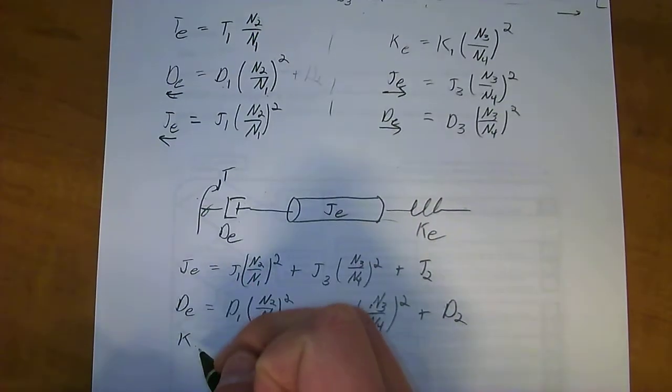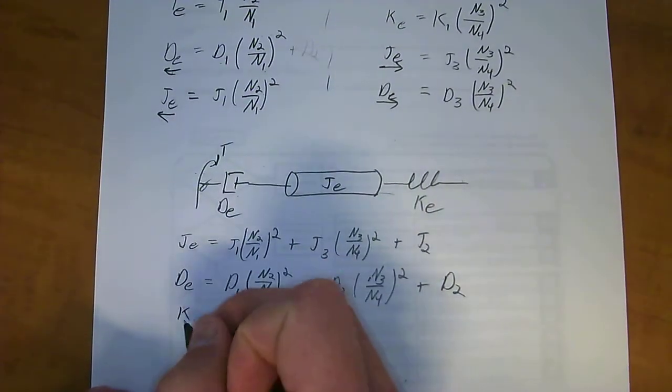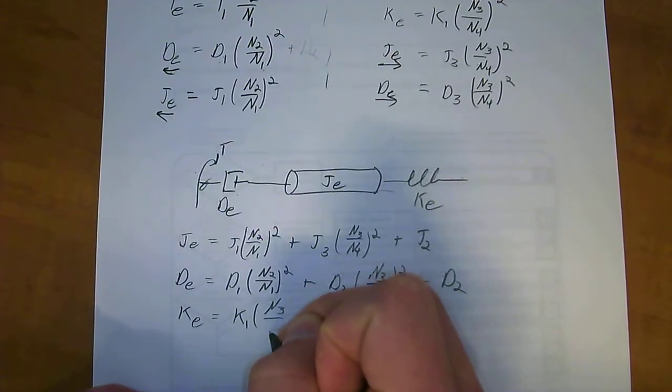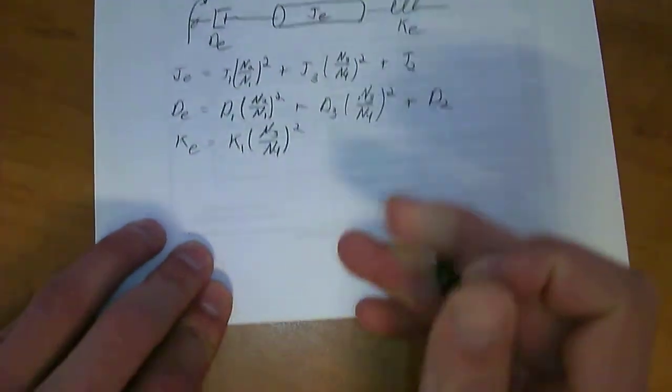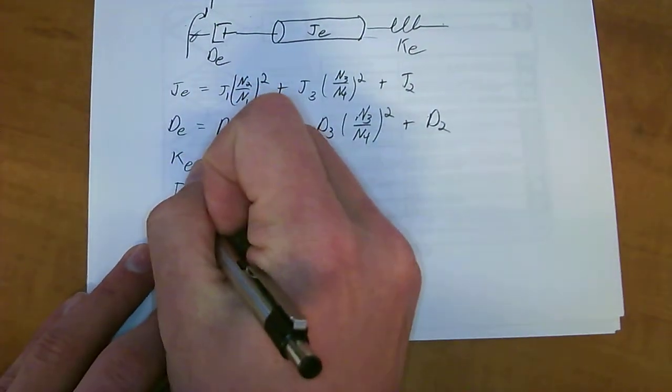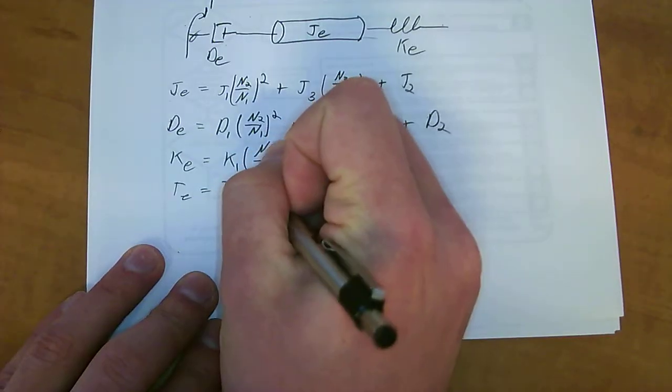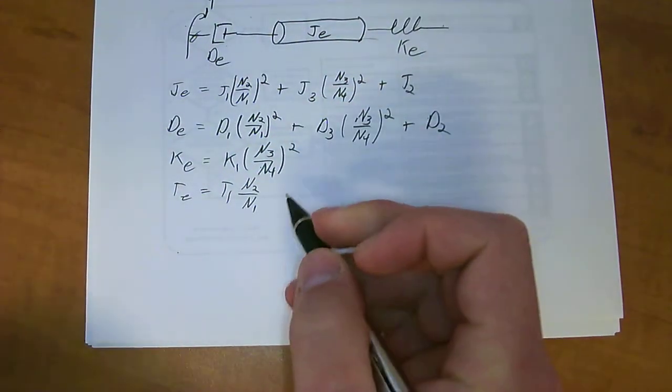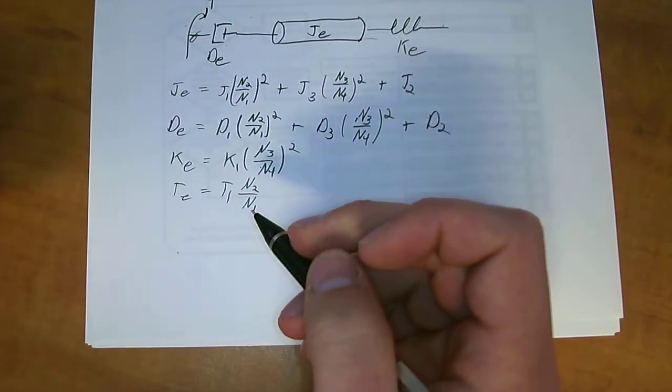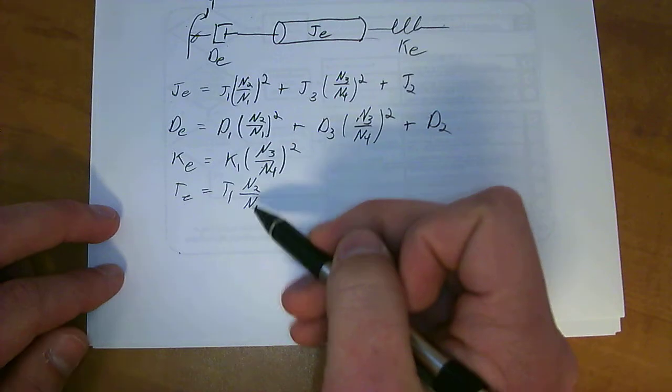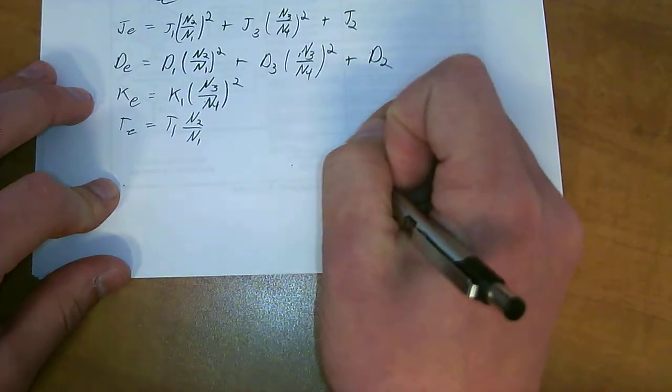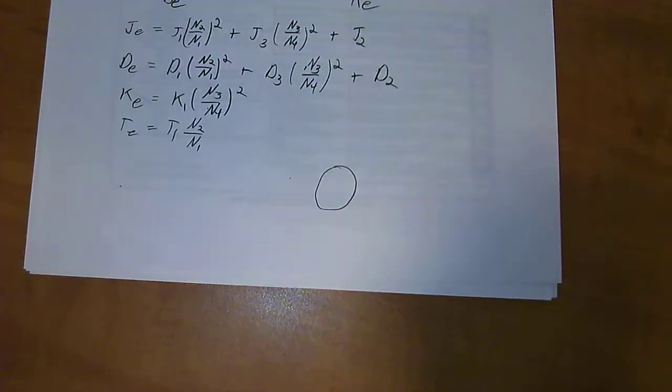Alrighty. And now for KE equivalent, there was no spring in here in the center at all. If there was, it probably would have been a lot more complicated. KE is going to be equal to K1 N3 all over N4 squared. Cool. So, now we have the equivalent values of all of these. And TE is still T1 N2 over N1. When you're transferring torque or rotation distance, like theta, through, you don't have to do the square. This is only for impedances, remember.